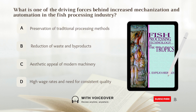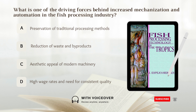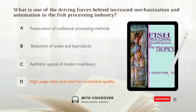What is one of the driving forces behind increased mechanization and automation in the fish processing industry? A. Preservation of traditional processing methods. B. Reduction of waste and byproducts. C. Aesthetic appeal of modern machinery. D. High wage rates and need for consistent quality. Answer: D. High wage rates and need for consistent quality is one of the driving forces behind increased mechanization and automation in the fish processing industry.